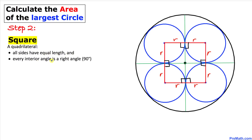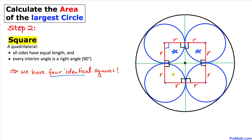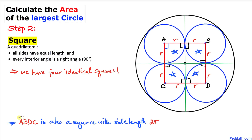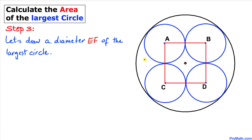Recalling the square definition: all sides of a square have equal lengths and every interior angle is 90 degrees. Therefore, we have four identical right-angle regions, and we conclude that ABDC is also a square. Its side length is r + r = 2r, so the side length of square ABDC is 2r on every side.